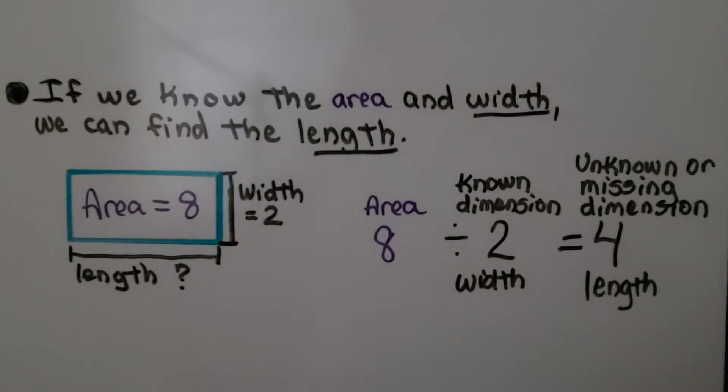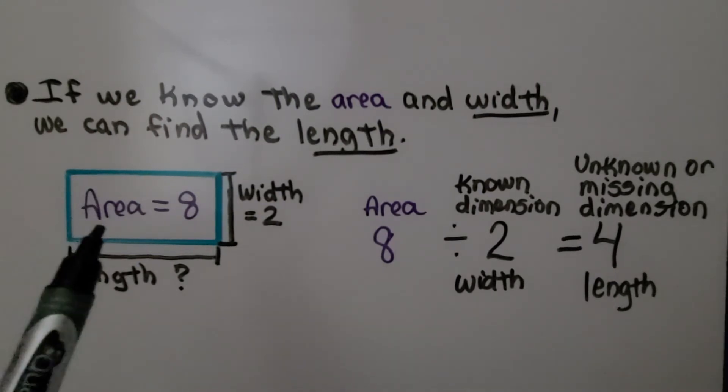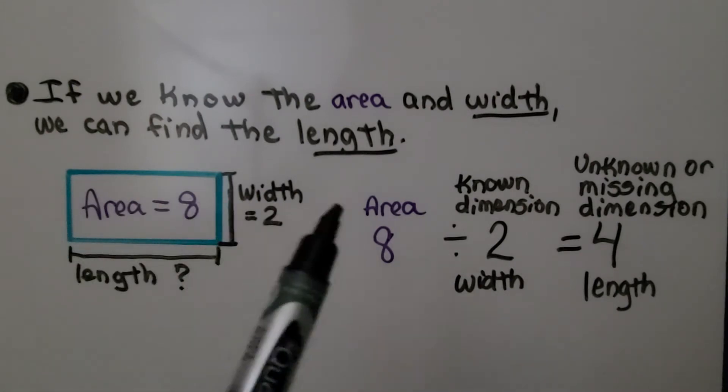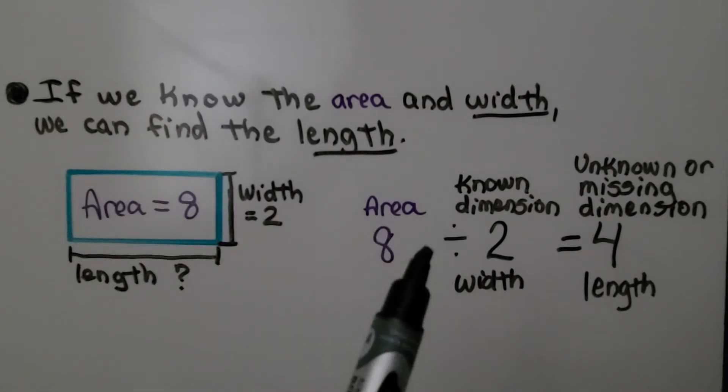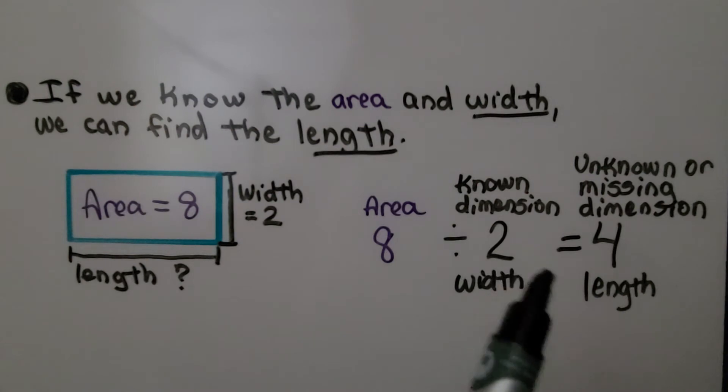Likewise, if we know the area and width, we can find the length. If we know the area is 8 and the width is 2, we can use division. 8 divided by 2 is equal to 4. We know the length is 4.